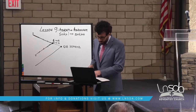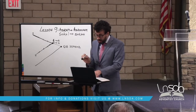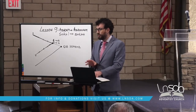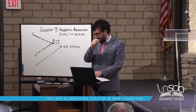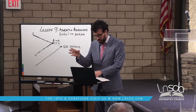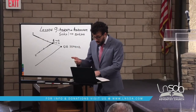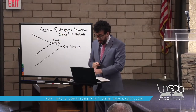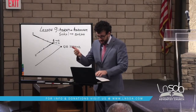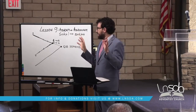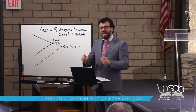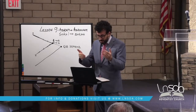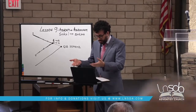And the word of the Lord came to him saying, 'This one shall not be your heir, but one who will come from your own body shall be your heir.' God tells him specifically, not the servant — somebody coming from your own body. Then he brought him outside and said, 'Look now toward heaven and count the stars if you are able to number them. So shall your descendants be.' And there's a very important statement here: 'And he, that is Abram, believed in the Lord, and he accounted it to him for righteousness.'